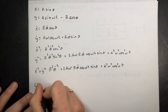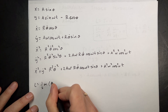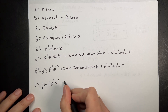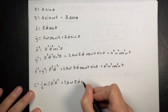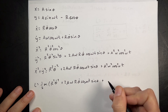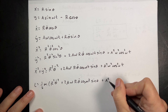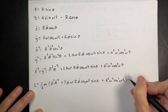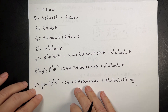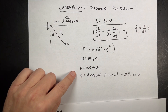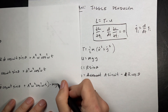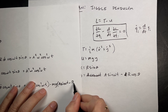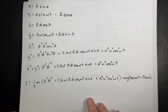Now I can write down my Lagrangian. L equals one-half m times (r squared theta-dot squared plus 2a omega r theta-dot cosine omega t sine theta plus a squared omega squared cosine squared omega t) minus mg times (a sine omega t minus r cosine theta). There's the Lagrangian.